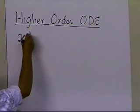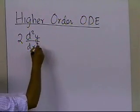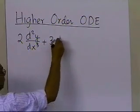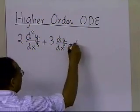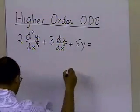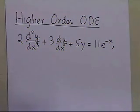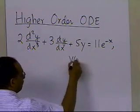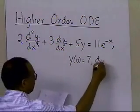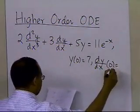We have 2·d²y/dx² plus 3·dy/dx plus 5y equals 11·e^(−x). That's the second-order differential equation given to us. The initial conditions provided are y(0) = 7, and the first derivative dy/dx at x=0 equals 13.